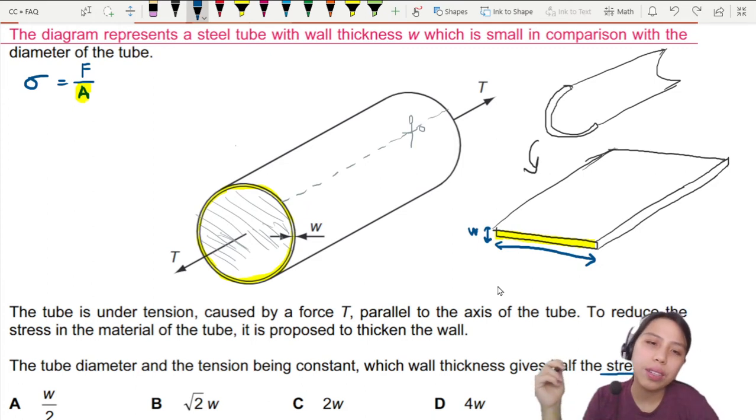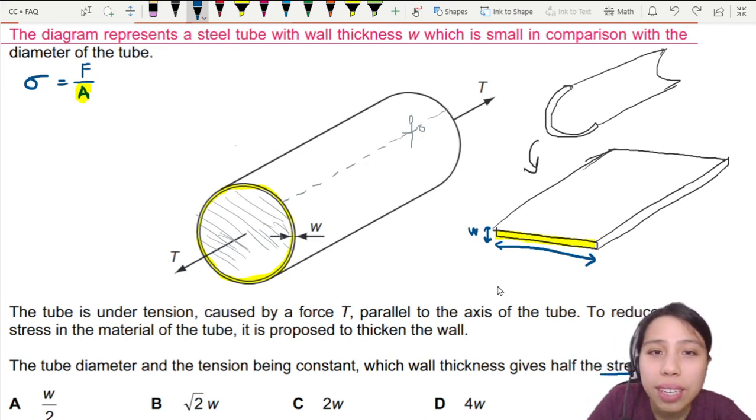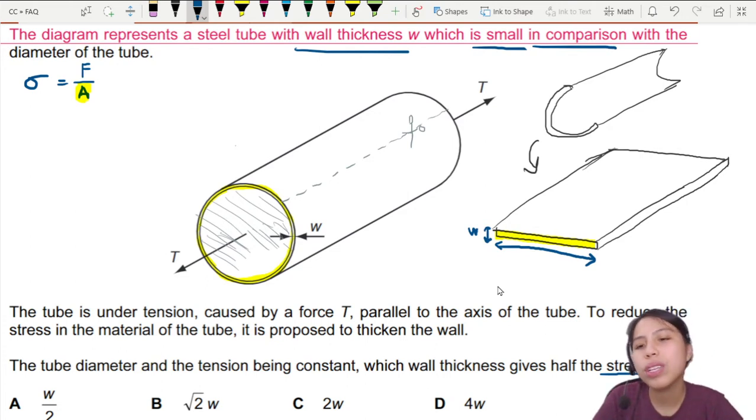Should we use the external or internal? There is a small difference, but it's negligible. Why? Because the wall thickness is small in comparison with the diameter. So we just assume we'll just use the circumference 2πr or 2πr to find that. So this is going to be 2πr or the diameter in terms of diameter also works. Anyway, let's put it all together now.